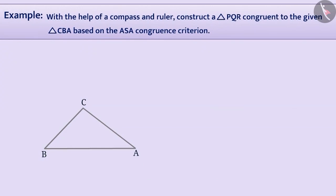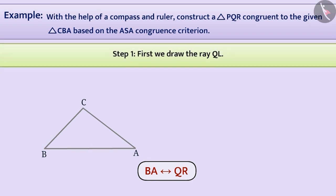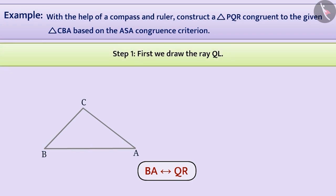We are given triangle CBA. Using a compass and ruler, we will construct triangle PQR based on ASA congruence criteria. First, we will draw side BA equal to side QR under the given correspondence. Step 1: First, we draw a ray QL.